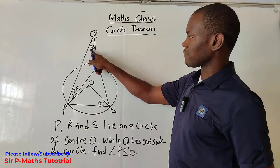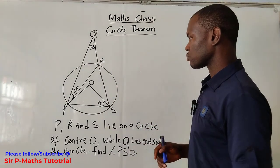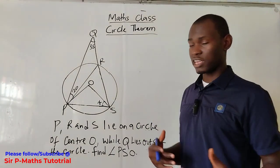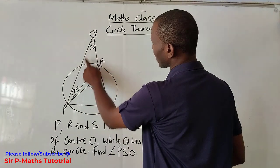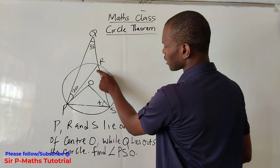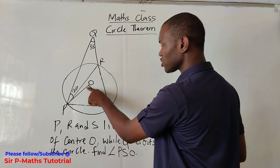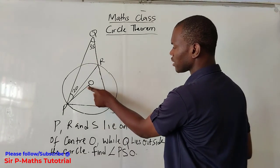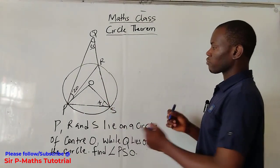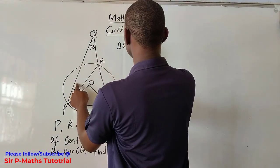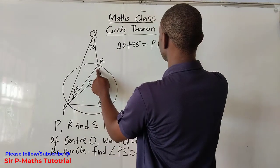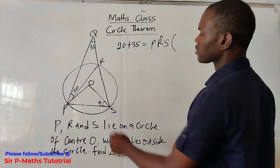We make use of 20 and 35 that are present in the diagram to get the linking angles, because in circle geometry one angle will link another angle that will link another angle to give you the angle you are looking for. So with 20 and 35, I can get the angle at position PRS. The first step: 20 plus 35 is equal to the angle PRS.